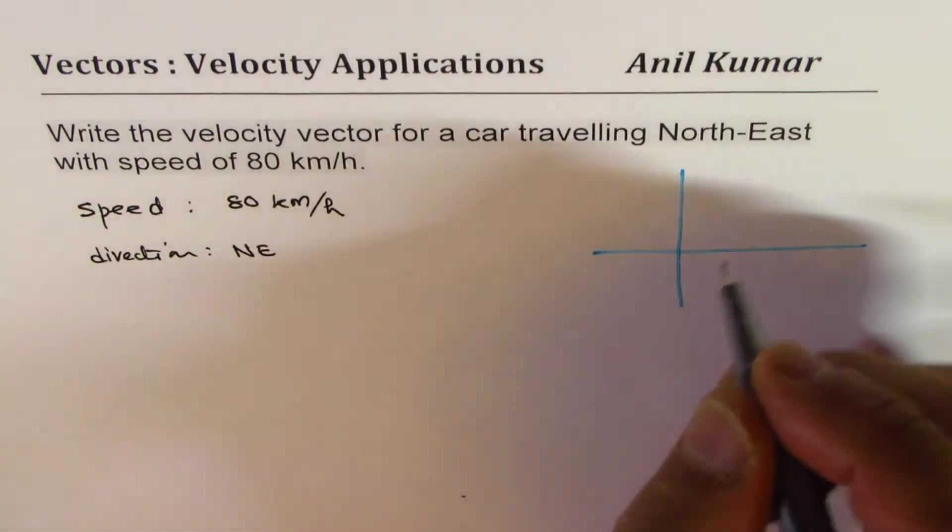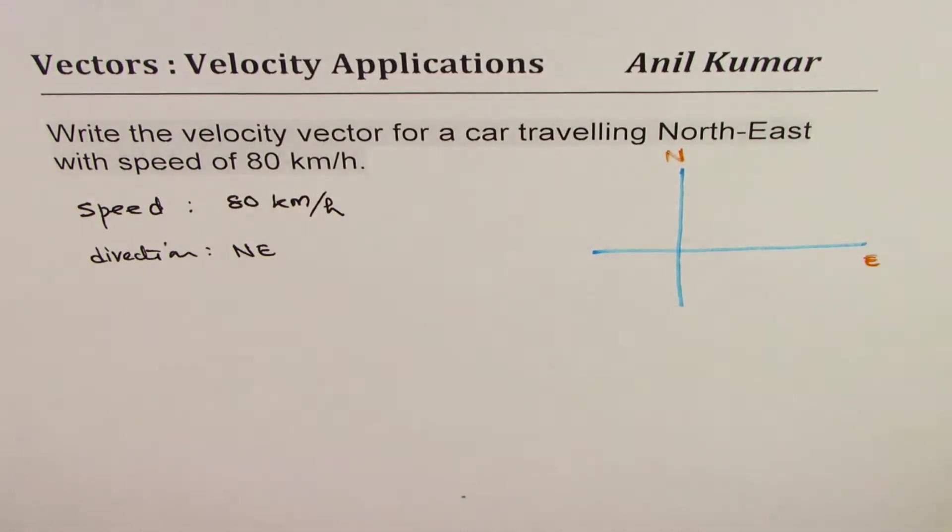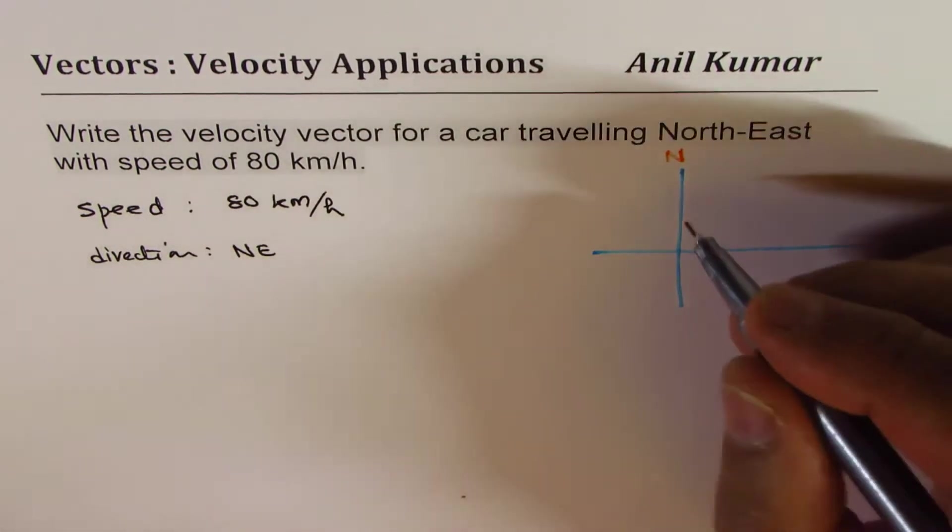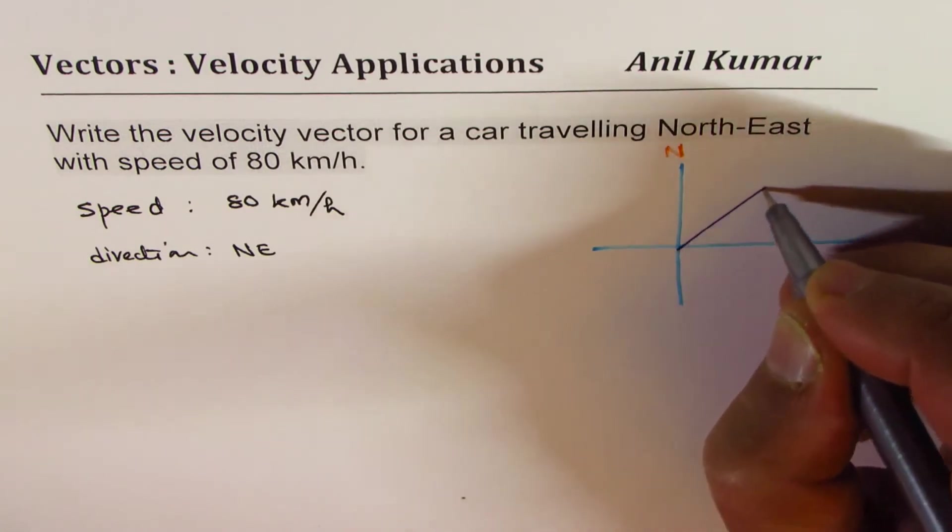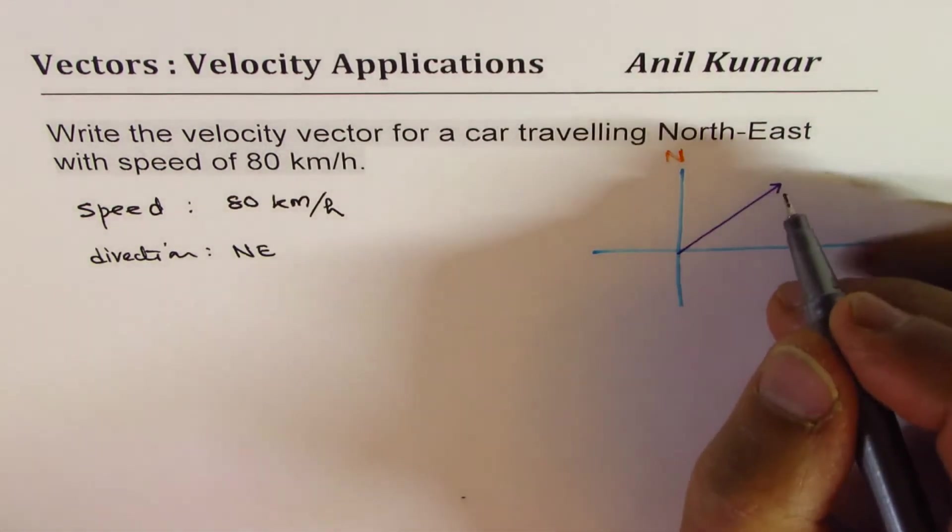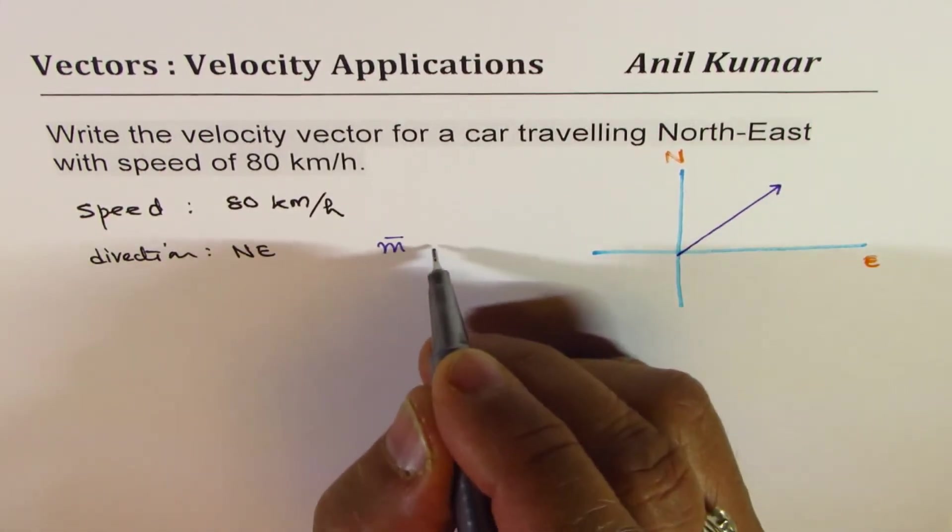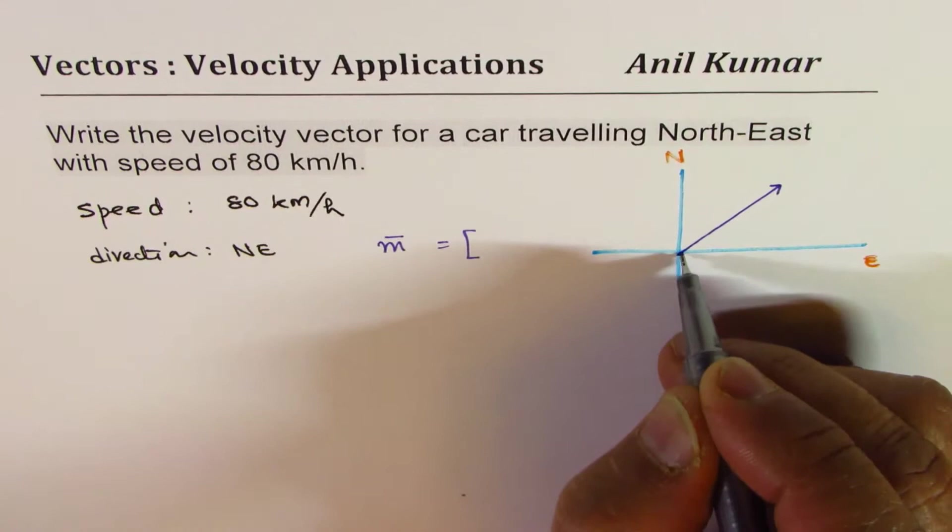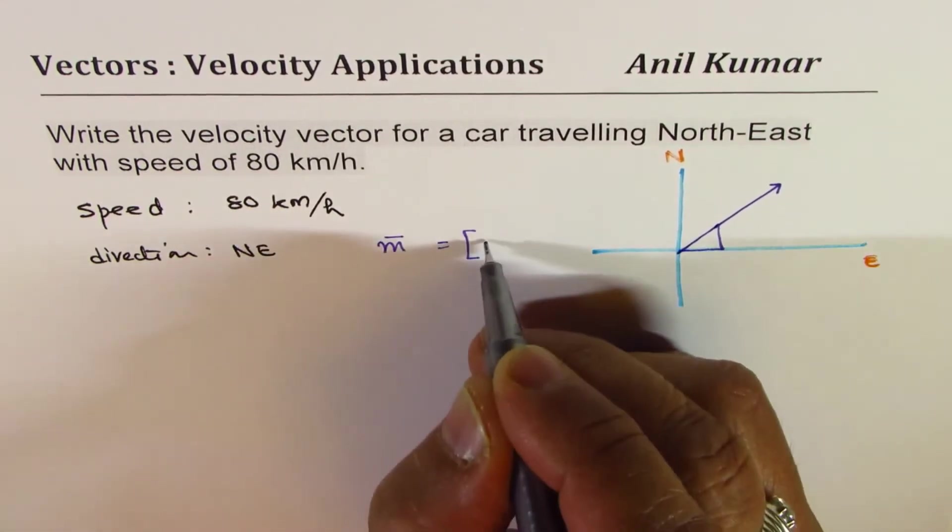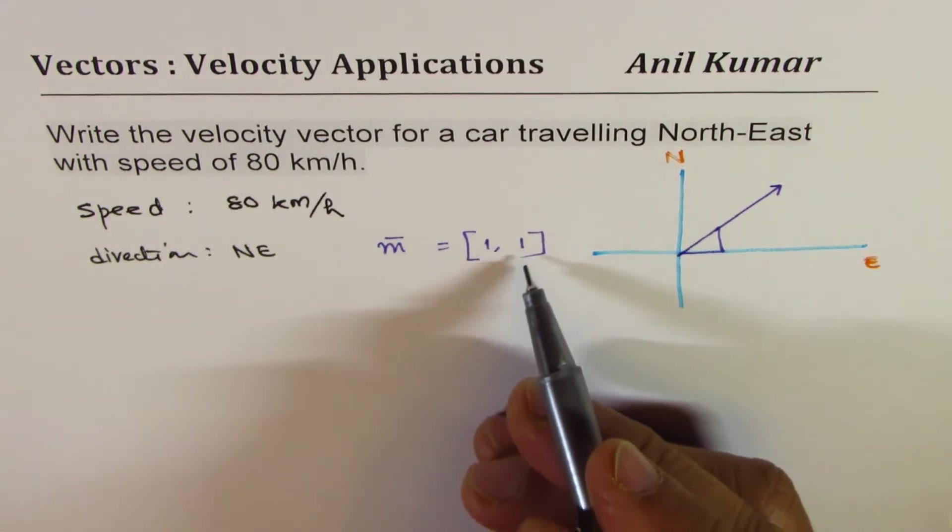Car traveling northeast, so this is north for us, this is east. So when we say northeast that means that is the direction. So this direction could be given as you could move one here, one up. So [1,1], do you see that? So northeast is [1,1].